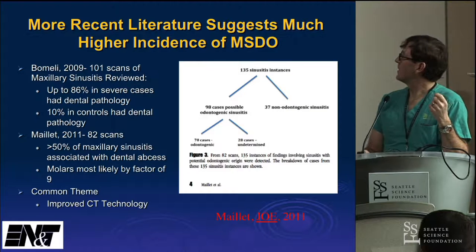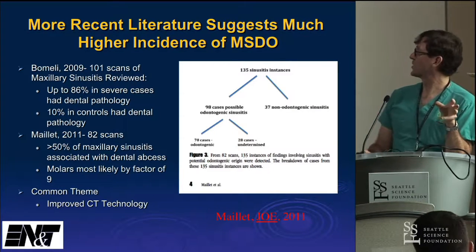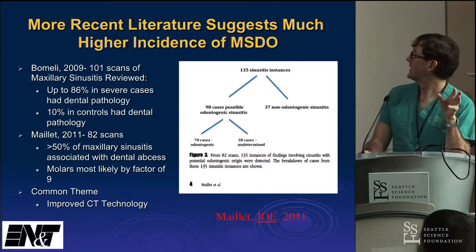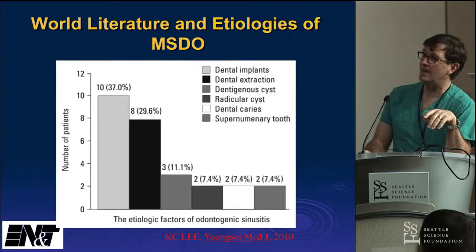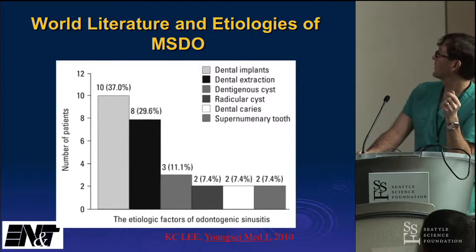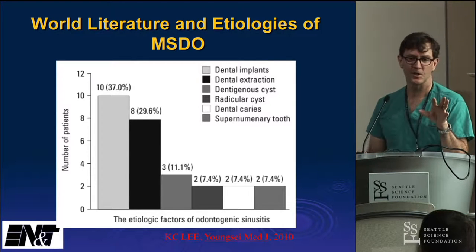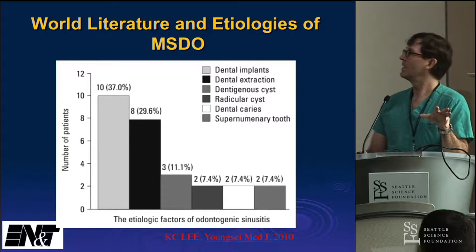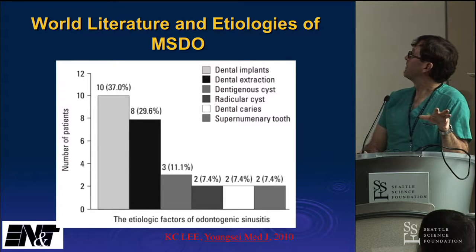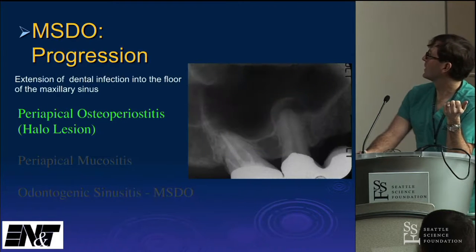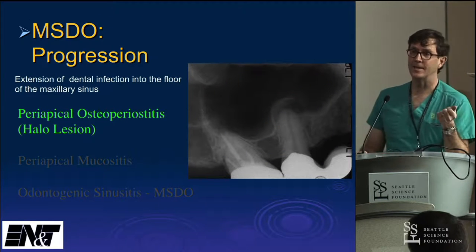Malet, in particular, who's from the dental literature, showed that over 50% of sinusitis were associated with dental abscess, most of the time from a molar abscess. That's partly because of good CT technology. The world literature shows many reasons for this, including implantitis, which is very common in Asia. What I'm really going to talk about is endodontal disease.